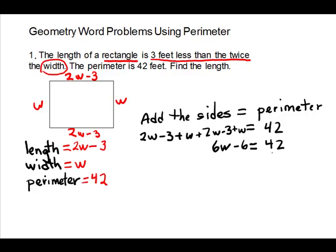Now we have a standard two-step equation to solve. We work on the side with w and take off the 6 that's subtracted. Since it's subtracted, we add. Adding 6 to the left cancels it out, leaving 6w, and adding 6 to the right gives us 48. Then we divide both sides by 6, giving us w equals 8. That's the width.